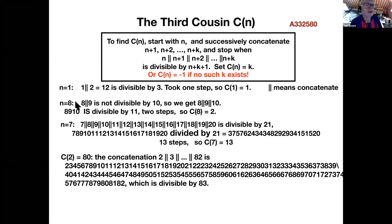Let me go to n equals 8. What's the eighth term? We start with 8. The next number is 9. Does 9 divide 8? No. So glue it on, and we get 89. Is 89 divisible by 10? Obviously not. So we glue on 10 to the end of 89, and we get the number 8910. Is that divisible by 11? Yes, it is, luckily. That took two steps. So C of 8 is 2. And that's the rule. For n equals 7, you start with 7. Glue on 8 and 9 and 10. You have to go all the way up to 20 before we get a number that's divisible by 21. That takes 13 steps. So C of 7 is 13.